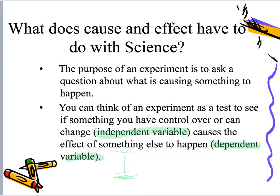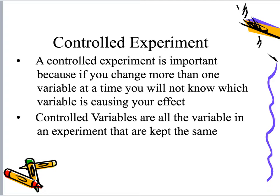Remember, the thing that we changed is the independent variable. A controlled experiment is important because you only want to change one variable at a time. If you change more than one variable, then you don't exactly know what change is causing your effect.